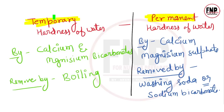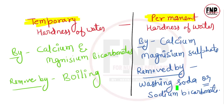Quick revision: temporary hardness of water calcium aur magnesium bicarbonate ki presence ke karan hoti hai. Jabki permanent hardness of water calcium aur magnesium sulfate ki presence ke karan hoti hai. Temporary hardness ko boiling se theek kar sakte hain, jabki permanent hardness ko duur karne ke liye washing soda ya sodium bicarbonate ka istemal kiya jata hai. Aap chahein to screenshot le lein apke revision ke liye.